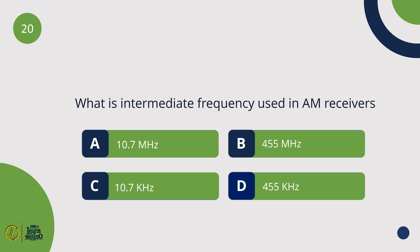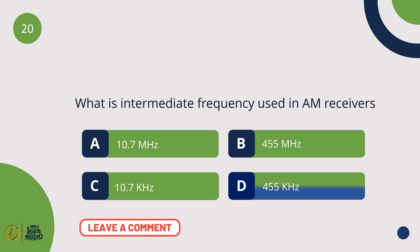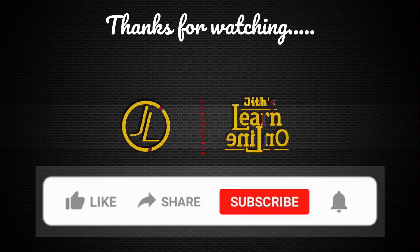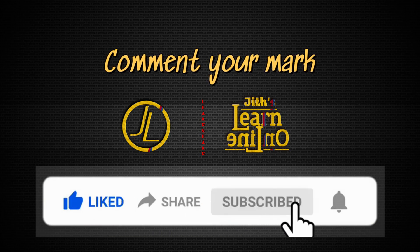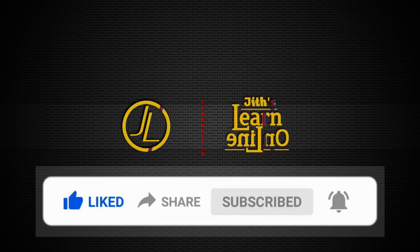What is the intermediate frequency used in AM receivers? 455 kHz.